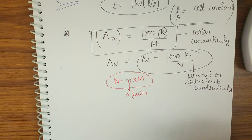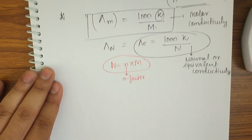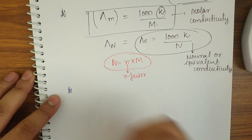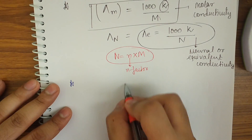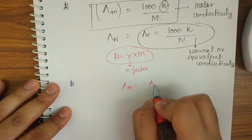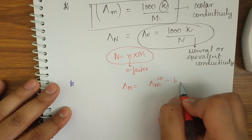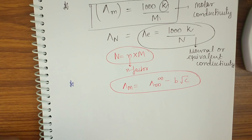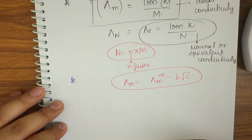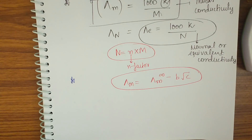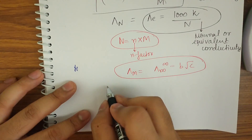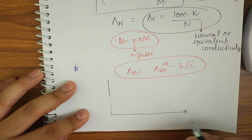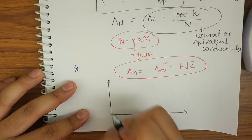From NCERT, we know that λm = λm∞ − b√C. This is a basic relation that has already been asked once in JEE Mains. This is the Debye-Hückel rule, and it is used for strong electrolytes.